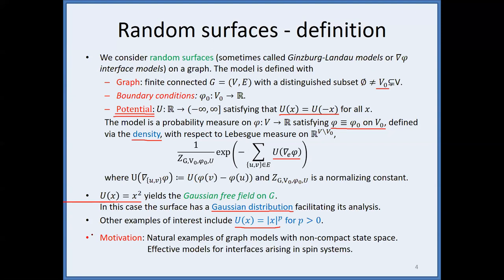The motivation for studying such objects is that they are natural examples of statistical physics models — like the Ising or Potts model — but taking values in a non-compact set, namely the real line. They are used to model interfaces separating two things, for instance the interface between plus and minus in an Ising model at low temperature with Dobrushin boundary conditions.